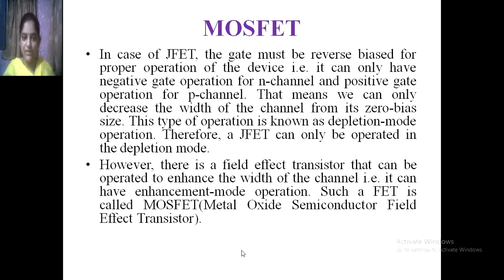In the case of JFET, the gate must be reverse biased for proper operation. In the previous session we saw in detail the JFET — Junction Field Effect Transistor — including N-type and P-type JFET. According to the structure of JFET, the gate must be reverse biased for proper operation, meaning it can only have negative gate operation for N-channel and positive gate operation for P-channel. Therefore, JFET can only be operated in the depletion mode.